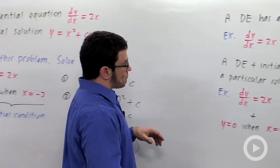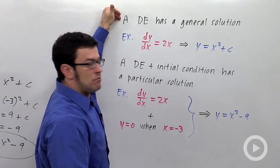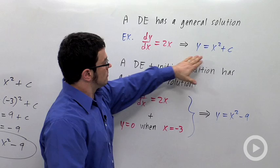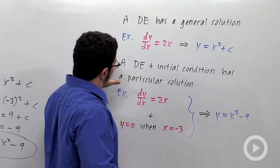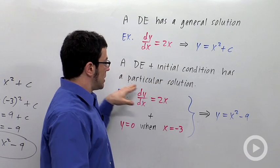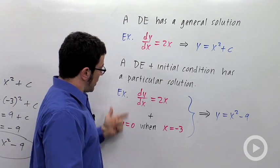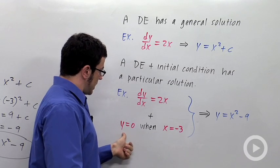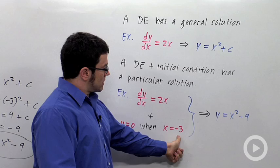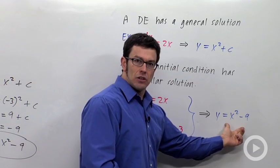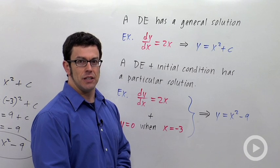Let's sum up two kinds of problems you can see in homework. First, a differential equation — find the general solution. This represents infinitely many solutions. You could also have a differential equation plus an initial condition, which in general has one particular solution. The initial condition is a condition on y — sometimes it's a condition on the derivative, like y equals 0 when x equals negative 3. This is called a particular solution to the initial value problem: differential equation plus initial condition.